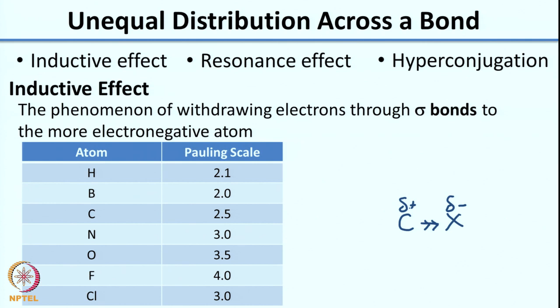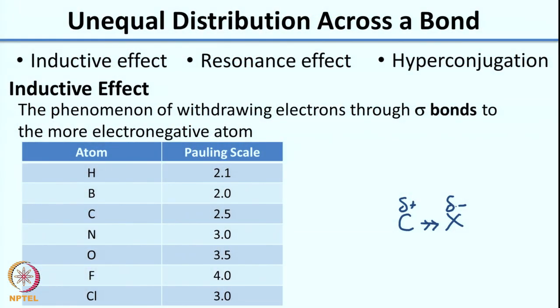To compare which atom is more electronegative, there is a scale called the Pauling scale, which ranks atoms based on their electronegativity. As the number goes up, electronegativity increases. I have shown you a few atoms here — you can find the full Pauling scale in any textbook. Imagine two friends standing next to a bag of chocolates; the stronger one would pull more chocolates to themselves. Similarly, the more electronegative atom grabs more electrons.